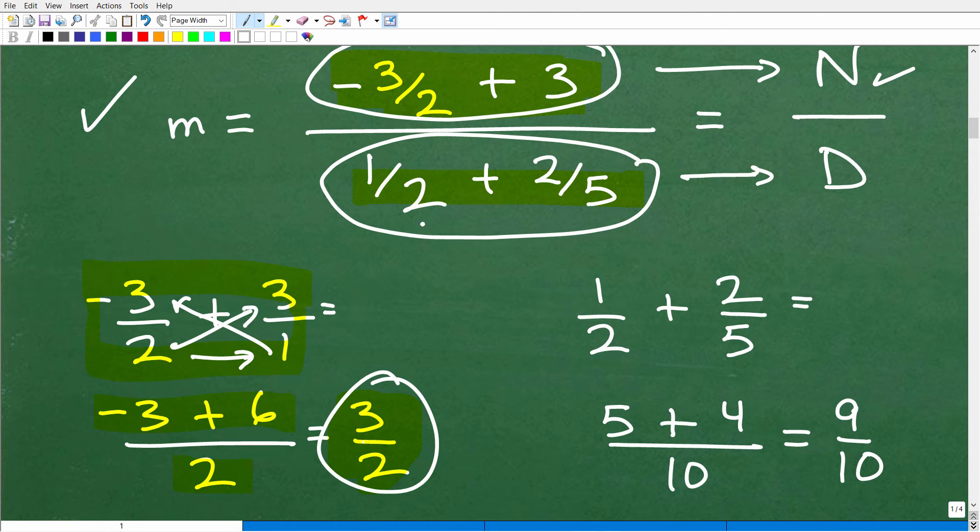So now let's go ahead and get our denominator. We have 1 half plus 2 fifths. So we'll do the same thing. 5 times 1 is 5. 2 times 2 is 4. Okay, we're adding. That's our numerator. So that's going to be 9 over 2 times 5 is 10. So 9 tenths is our denominator.